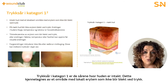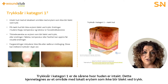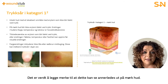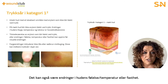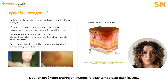Category 1 pressure ulcers are those with the skin remaining intact. They are characterised by an area of localised, non-blanching erythema. It's worth noting that on darkly pigmented skin this may appear differently. There may also be changes in sensation, temperature, or the firmness of the skin.